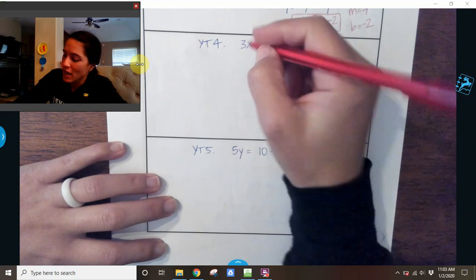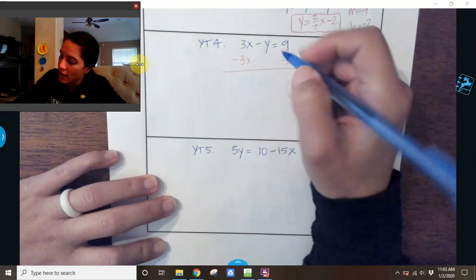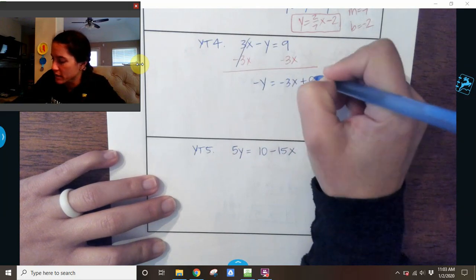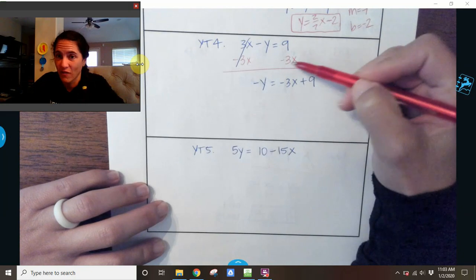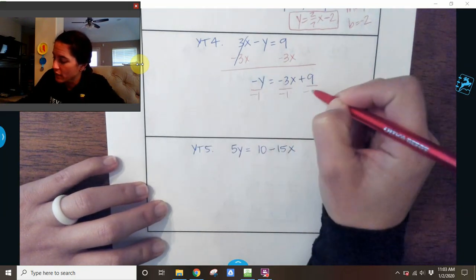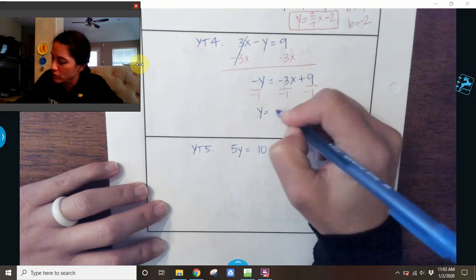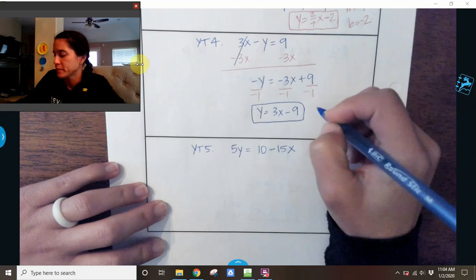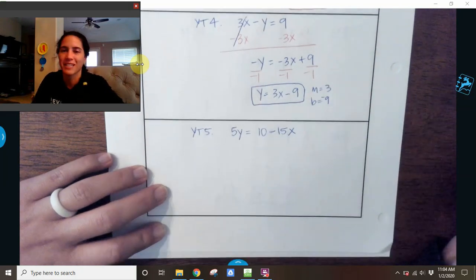3X minus Y equals 9. So I need to move my 3X over. And I'm going to be left with negative Y equals negative 3X plus 9. Again, I want my X value to go first. I need to divide by negative 1. And when I divide by negative 1, I get Y equals 3X minus 9. So my slope is 3 and my Y intercept is negative 9.